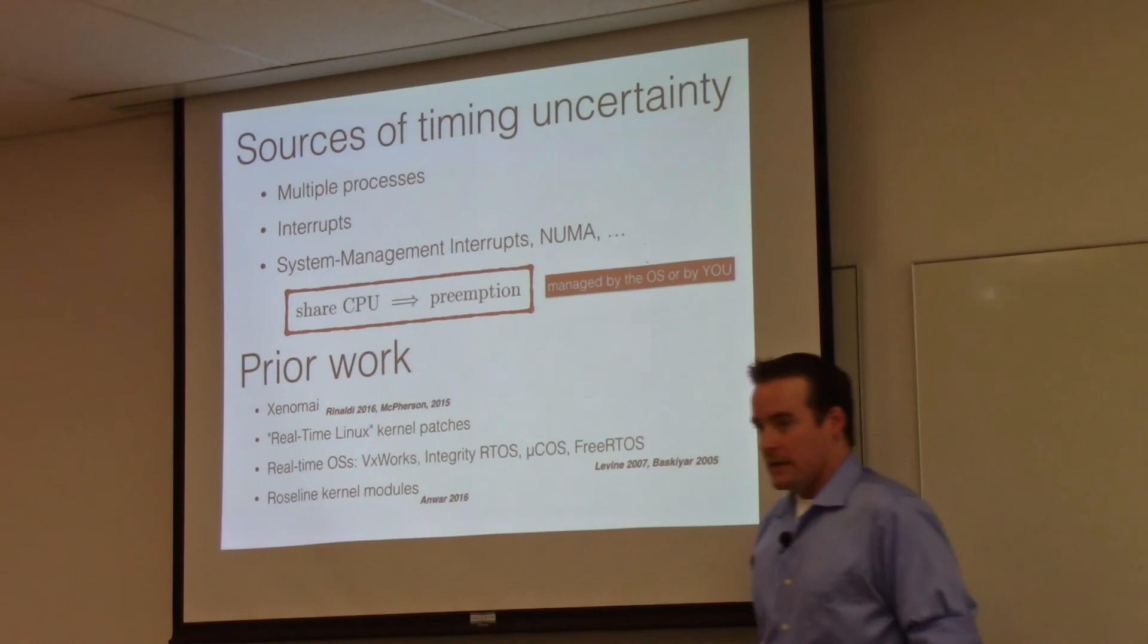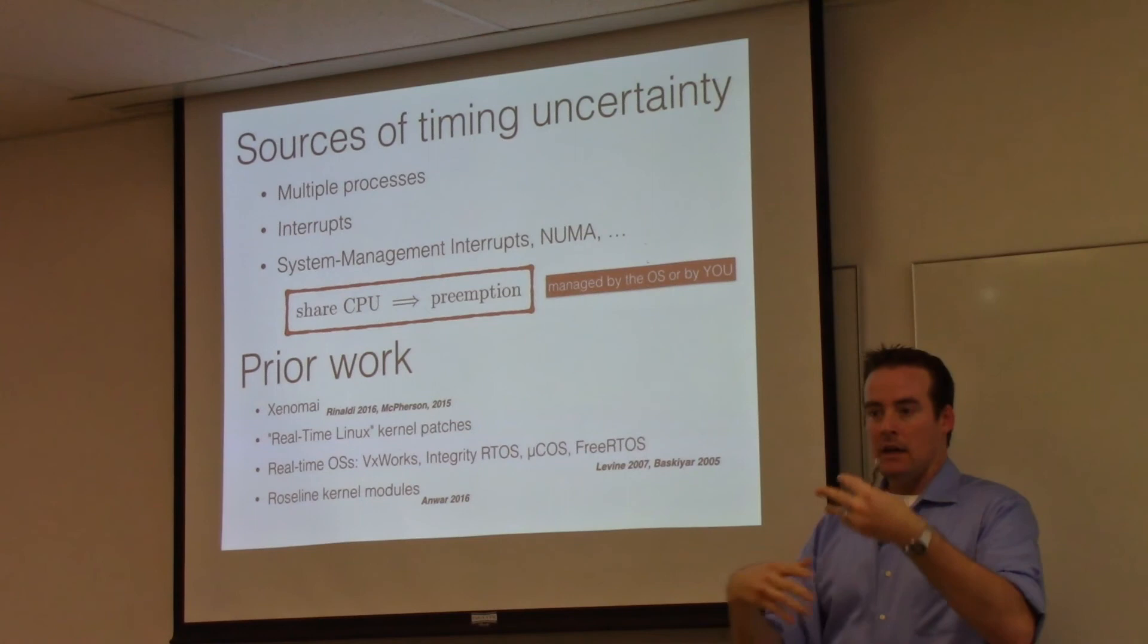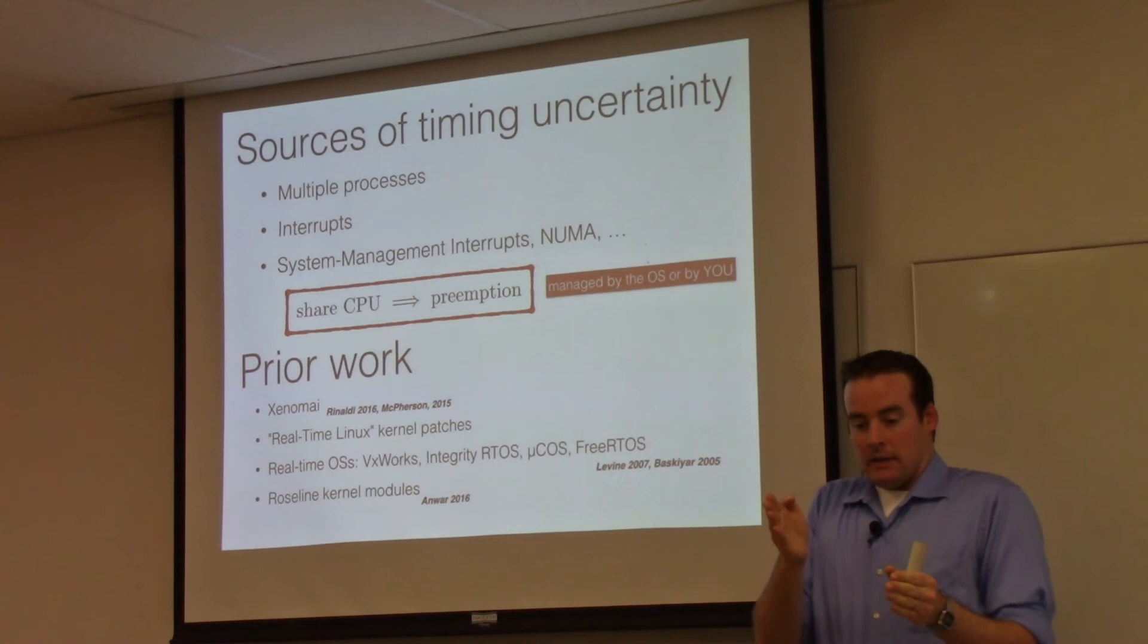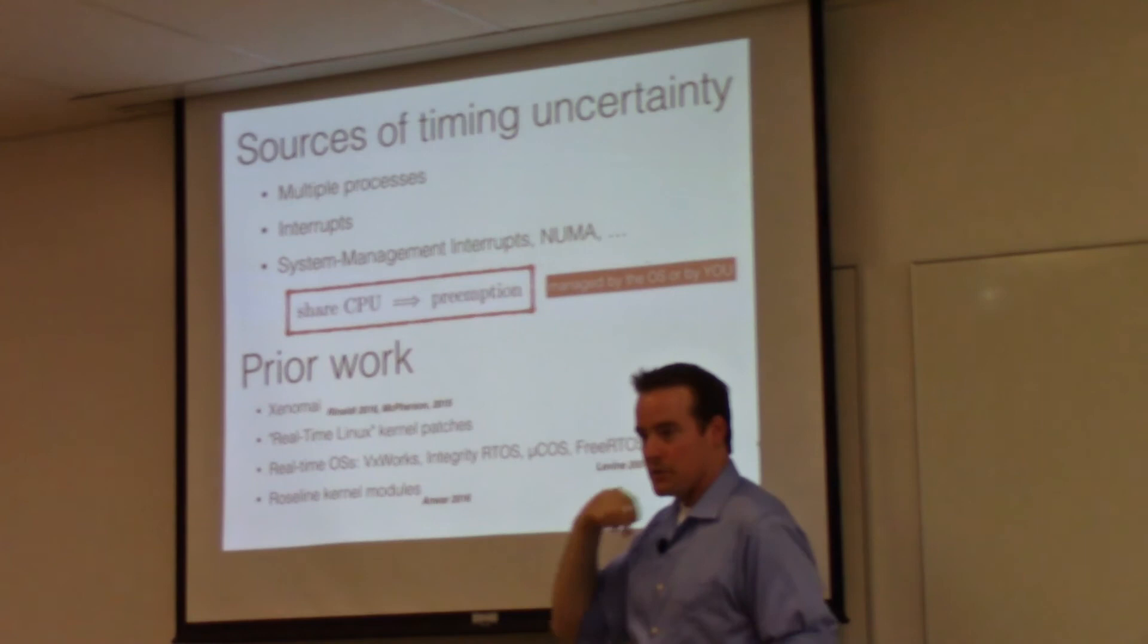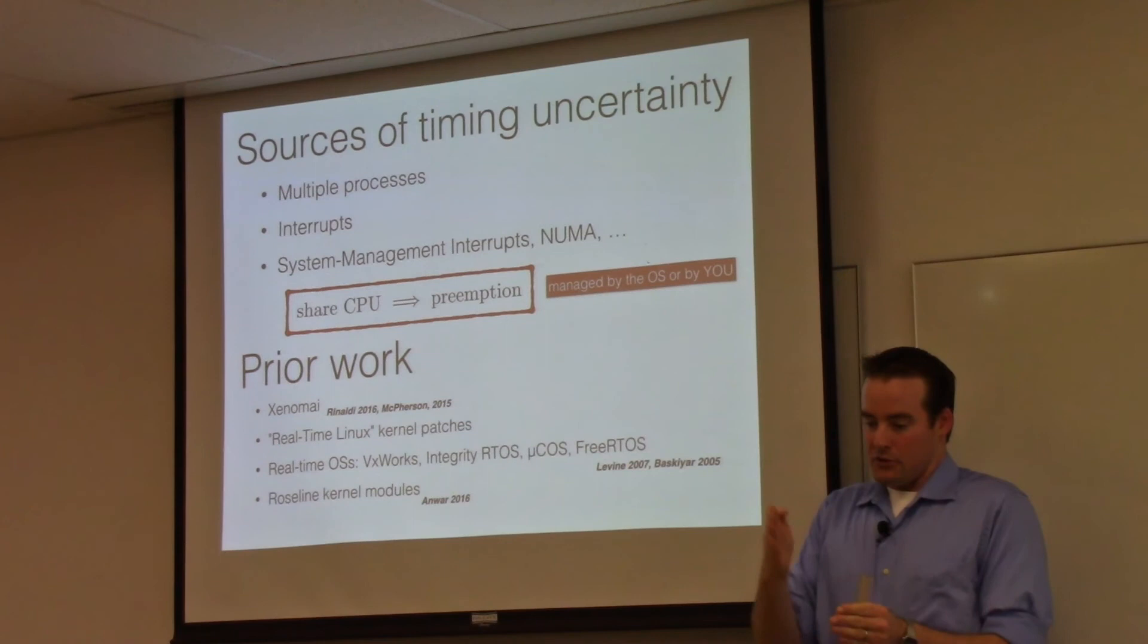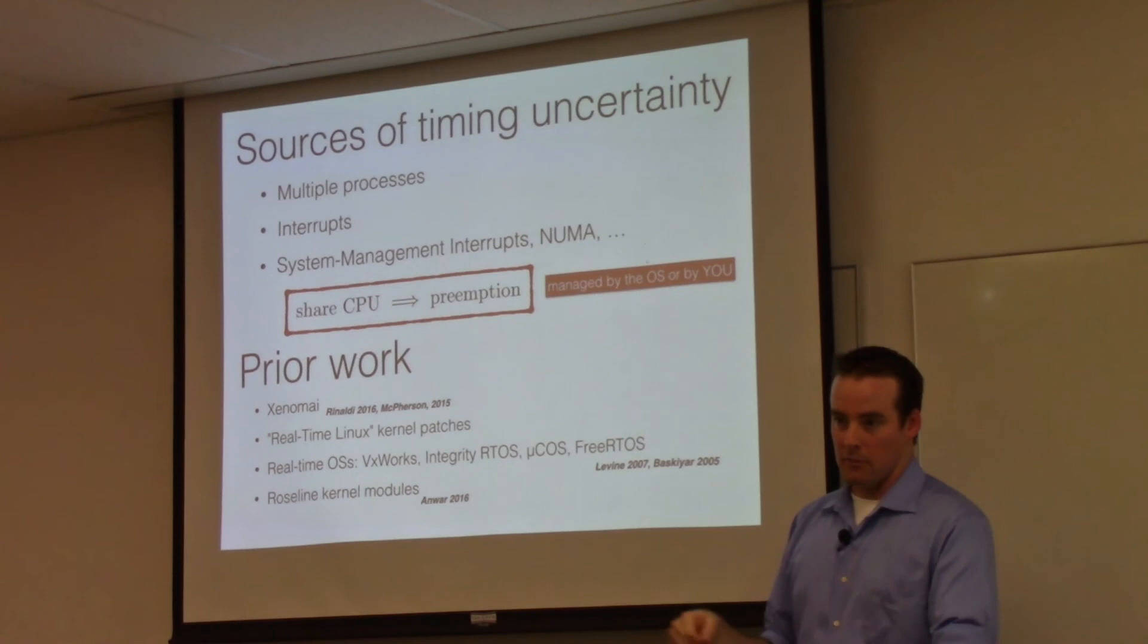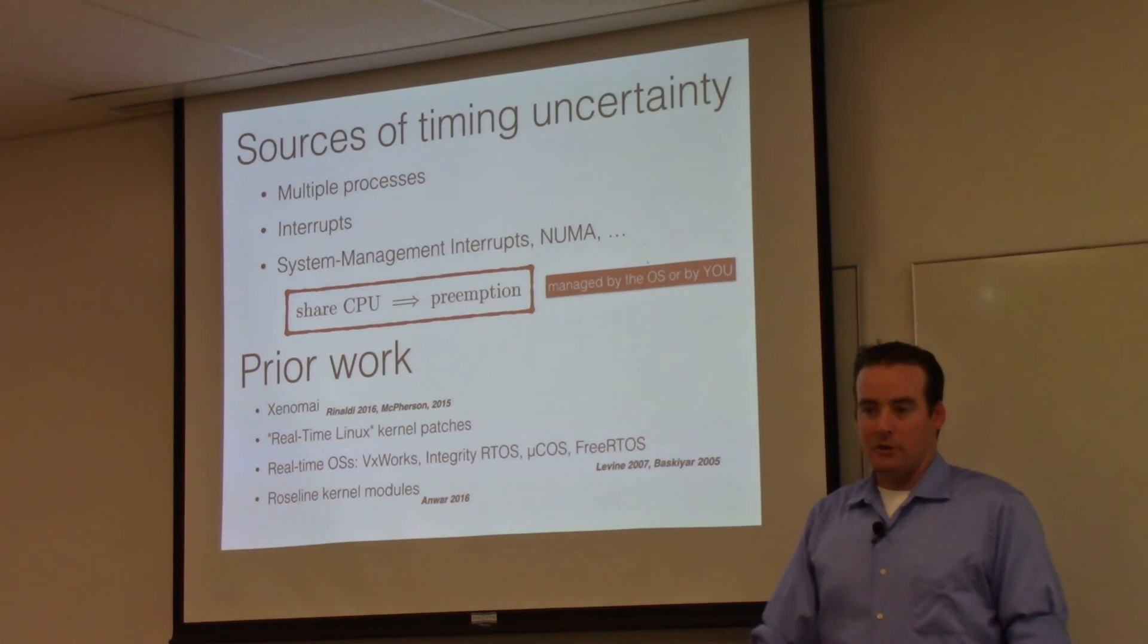There are real-time OSs like VxWorks and MicroCOS that establish nice primitives for dealing with semaphores and mutexes for shared resources between tasks and give you primitives for sleeping for a very precise amount of time. That can be nice, but can be kind of a pain to set up. In our Roseline project, we have some collaborators at UCLA who developed kernel modules that expose to you, the controls programmer, timing primitives that allow you to schedule tasks at very precise times and also do clock synchronization across a network in case you're doing some sort of distributed control thing.